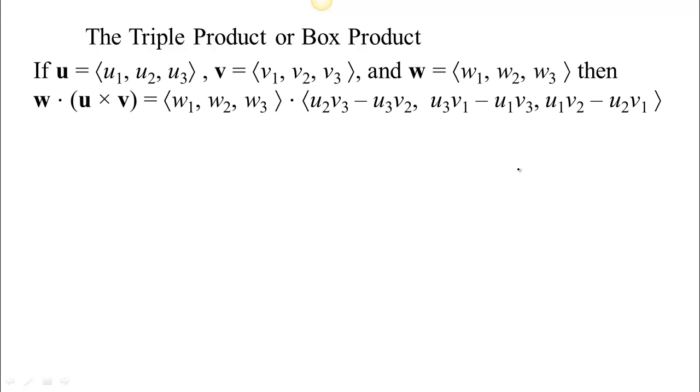The relationship between the cross product and the determinant is not an accident. In order to understand it more deeply, we need to know about something called the triple product, or the box product. So if you have three vectors, u, v, and w, then we define this product of three vectors, called the triple product, to be w dot u cross v.